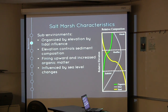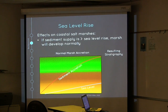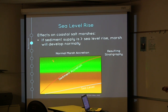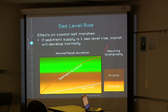As we go from low elevation to high elevation — from sub-tidal to mud-flat to marsh — we see a fining upward sequence: percent sand decreases as percent mud increases. We also see a rise in organics as we increase in elevation, and all of these are influenced by sea level change. If sediment supply is greater than sea level rise, we should see the marsh develop normally, progressing from sub-tidal to mud-flat to marsh.